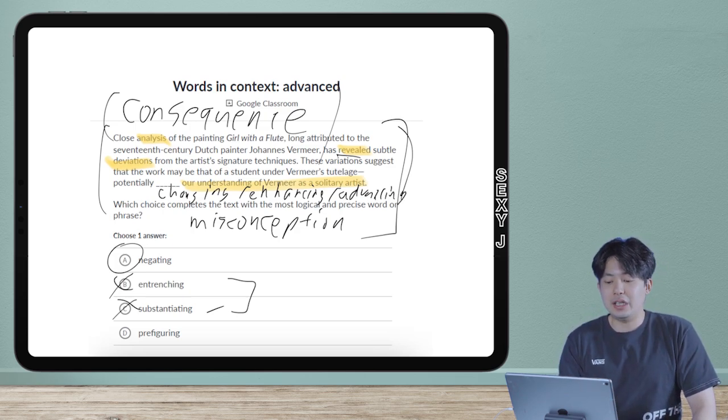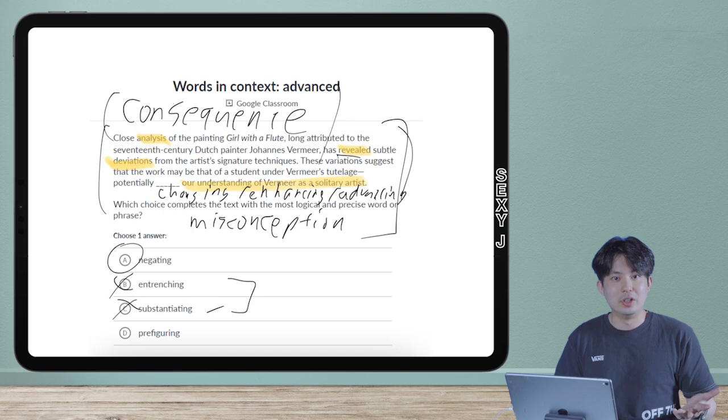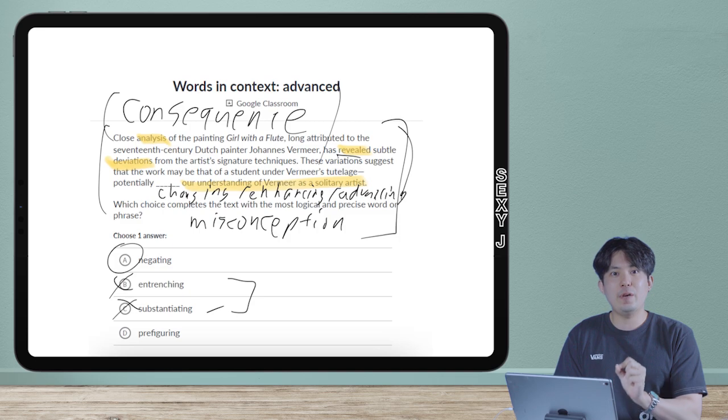You're like, doesn't that sound really negative? The gate, negative - they're related words. But negating, as in it's going against our previous understanding - is that a natural way to write? If I were your English teacher, would I say you should use the word negating here? Not really. If anything, you could use like challenging our understanding or something like that. Negating does sound pretty weird, but that doesn't matter.